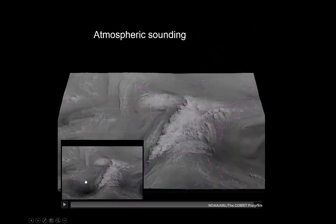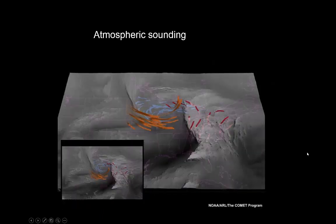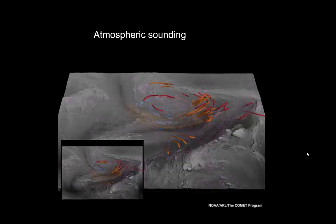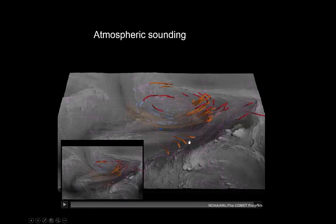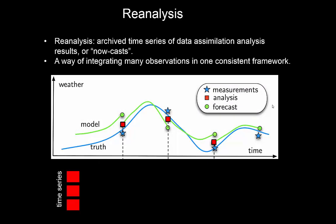Here's an example of what you get when you do atmospheric sounding. In white colours you see very moist air, and in black or dark colours you see quite dry air. You can see in quite detailed three dimensions how a system is moving across the United States, and what the atmospheric layers and currents look like — really useful information.